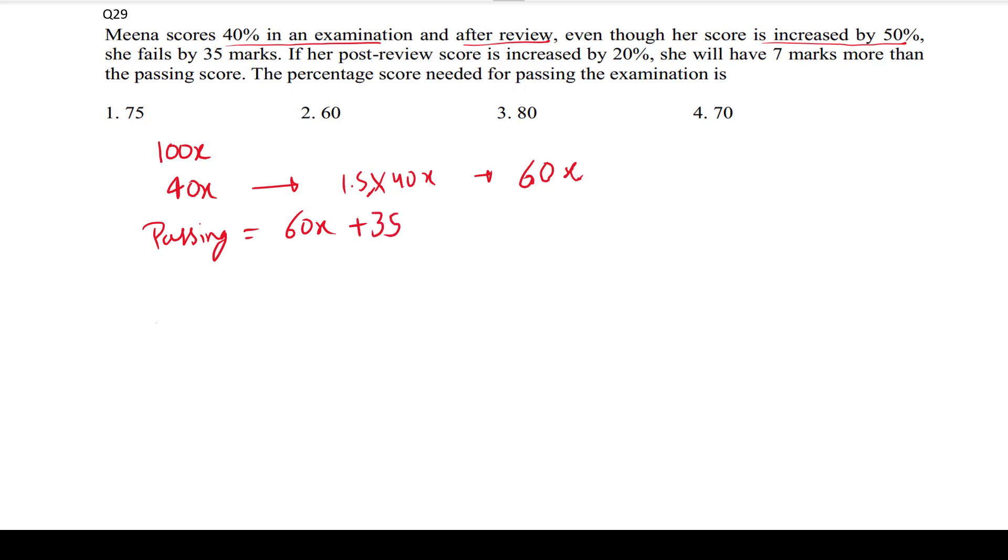If her post-review score is increased by 20%, this will be 72x. She will have 7 marks more than the passing marks. This means 72x equals 60x plus 35 plus 7.